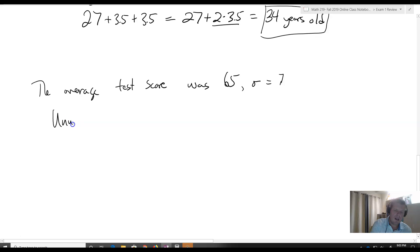An unusually low score would be 65 minus two times seven, because we're going to get smaller, and that would be a score of 51. That's an unusually low score—or we'd really want to say 51 or lower.